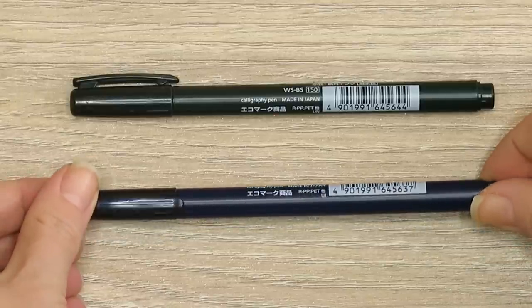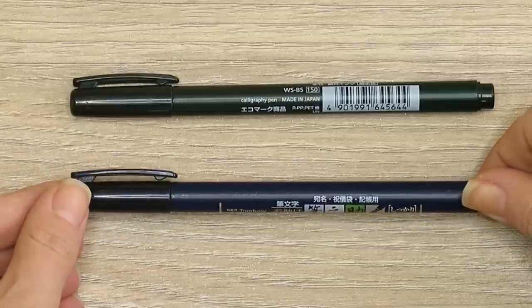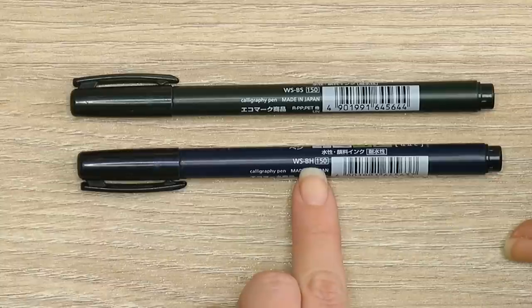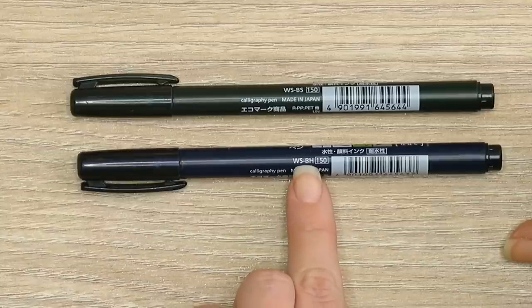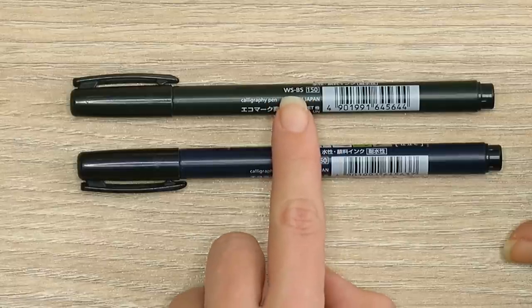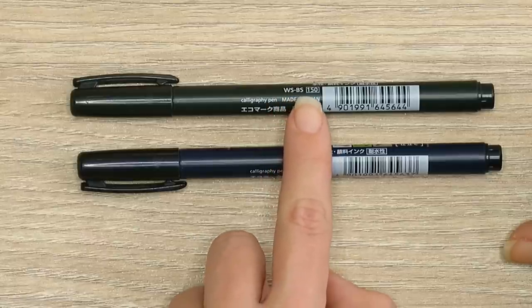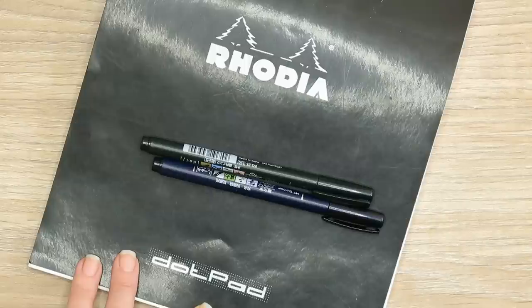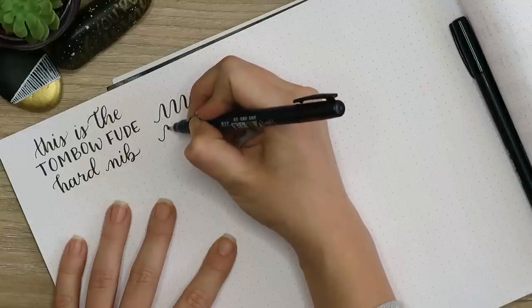We're going to do brush lettering with Tombow Fudenosuke pens. I'm going to recommend the Tombow Fudenosuke hard to beginners—that's what I'm pointing to right here. It says WS-BH, that signifies that it's the hard, and WS-BS signifies that it's soft. Both of them are great for beginners, but the harder one is a little bit easier. We're going to be using a Rhodia dot pad which has a grid pattern on it. Those are great for beginners because it's got the lines set up for you, and they're also good for your brush pens because the paper is smooth and it's not harsh on your nibs.